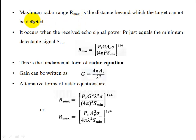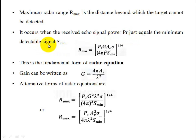The maximum radar range is the distance beyond which a target cannot be detected. At maximum range, the received echo signal power is equal to the minimum detectable signal: Pr = Smin. So, the maximum radar range is derived from Pr = PtGAeσ / [(4π)² × r⁴] set equal to Smin.